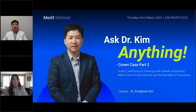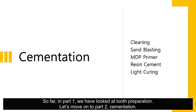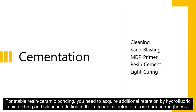And lastly, we will take a look at the final steps of the crown — bonding of the fabricated crown. Let's talk about the final step: cementation, rooting, or bonding. In part one we looked at tooth preparation. Now let's move on to part two — cementation. For stable resin ceramic bonding, you need to acquire additional retention by hydrofluoric acid etching and silane, in addition to mechanical retention from surface roughness.